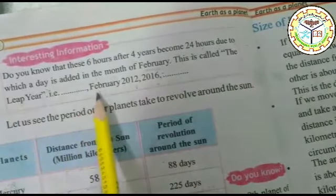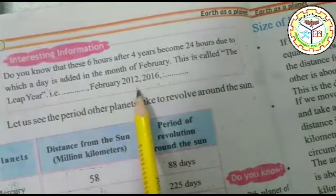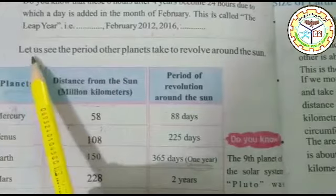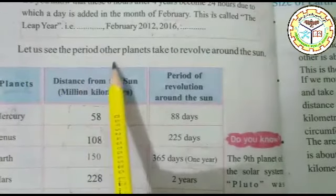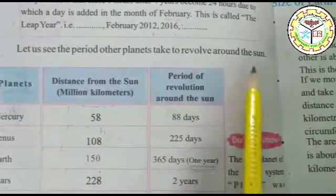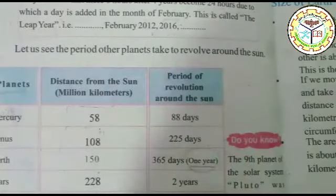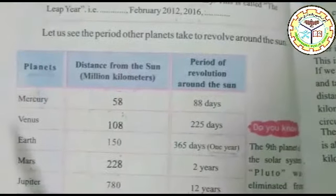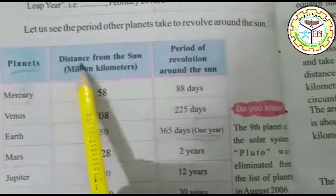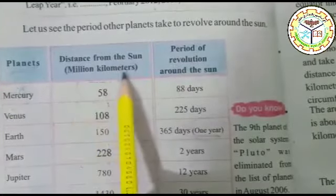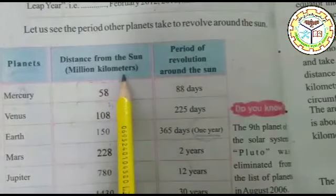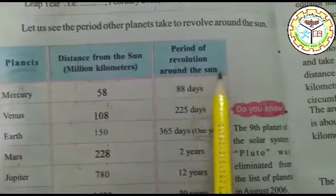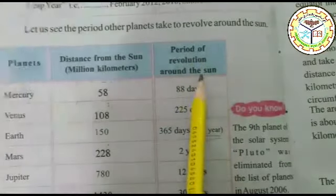جیسے کہ February 2012 اور 2016۔ Students, let us see the period other planets take to revolve around the sun — آئیے دیکھتے ہیں کہ باقی سیارے کتنے عرصے میں سورج کے گرد چکر مکمل کرتے ہیں۔ Planets — سیارے; Distance from the sun in million kilometers — سورج سے فاصلہ؛ Period of revolution around the sun — سورج کے گرد چکر لگانے کی مدت۔